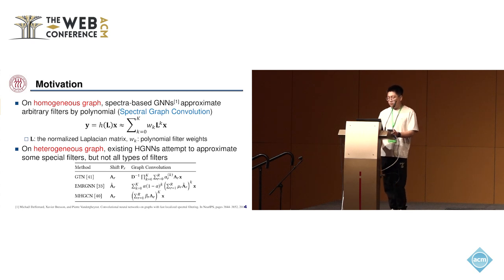Our motivation comes from two aspects. First, we recall that spectral-based GNNs on homogeneous graphs approximate arbitrary graph filters by polynomials. Specifically, the graph filter function is approximated by a polynomial with some filter weights w_k. It's worth noting that such polynomials can approximate various filters, such as high-pass filter, band-pass filter, and so on.